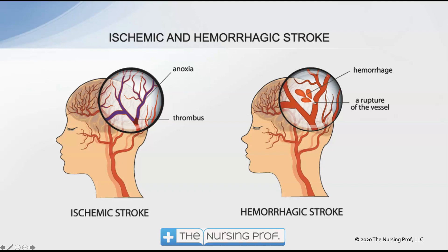First, let's talk about the different kinds of stroke. The first is an ischemic stroke — that's the majority of our strokes — and then there are hemorrhagic strokes. As the images show, with an ischemic stroke we have a thrombus or an emboli blocking part of the circulation, causing ischemia, injury, and necrosis. With a hemorrhagic stroke, a blood vessel has burst, allowing blood to leak into the brain tissue or into spaces around the brain, compressing the brain and causing additional injury from the hematoma.